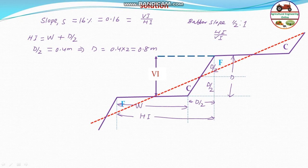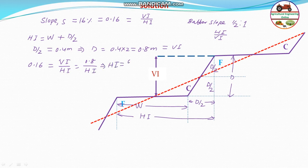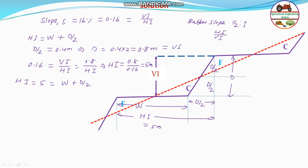The slope percentage is 0.16, which equals VI divided by HI. So 0.16 = 0.8 divided by HI. Therefore, the horizontal interval HI = 0.8 / 0.16 = 5 meter. Also, HI is equal to width w plus d/2. Since d/2 = 0.4, therefore the width = 5 minus 0.4 = 4.6 meter.